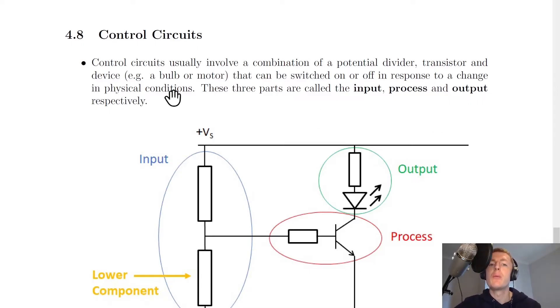We're going to look at what these parts are. Control circuits usually involve a combination of a potential divider, transistor, and device, for example a bulb or a motor, that can be switched on or off in response to a change in physical conditions. What we mean by physical conditions is external conditions such as light intensity changing or temperature changing.